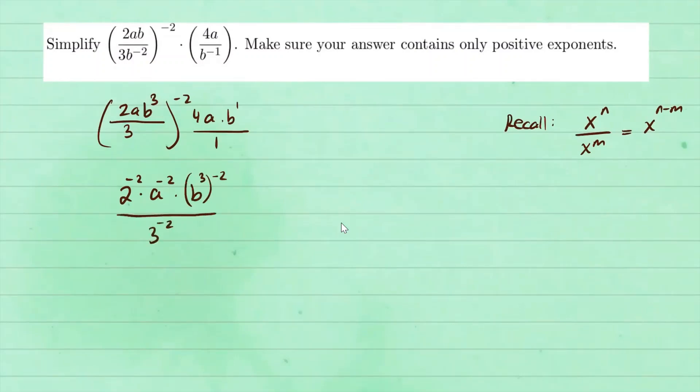All over 3 to the negative second power, and rewrite the next expression for a, b, all over 1.